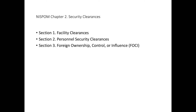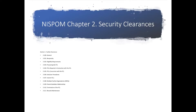When we go through our 13 adjudicated processes, the investigators and adjudicator want to know how much foreign influence is over us, but we also do the same thing for the facilities. There are a lot of areas in Chapter 2, and we're going to go through those and make sure you understand it.